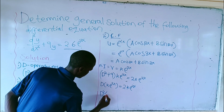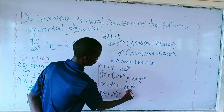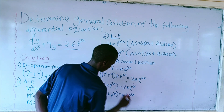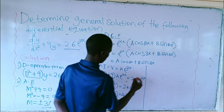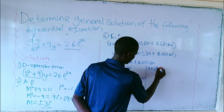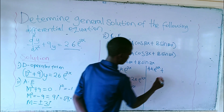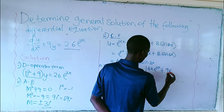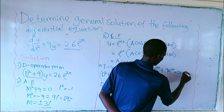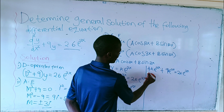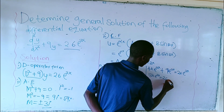Then again, we go to the second derivative of k exponential 2x. The derivative of 2x gives 2, so 2 times 2 gives 4k exponential 2x. Because the second derivative is the same as d squared, this equation gives 4k exponential 2x. We add 9 multiplied by k exponential 2x, giving 9k exponential 2x, which is equal to 26 exponential 2x. Adding like terms gives 13k exponential 2x, which is the same as 26 exponential 2x.